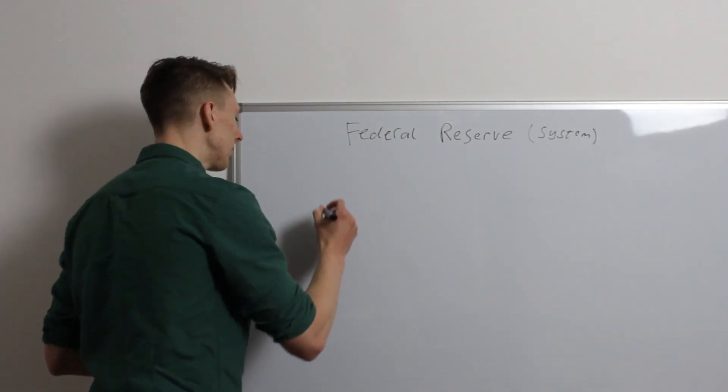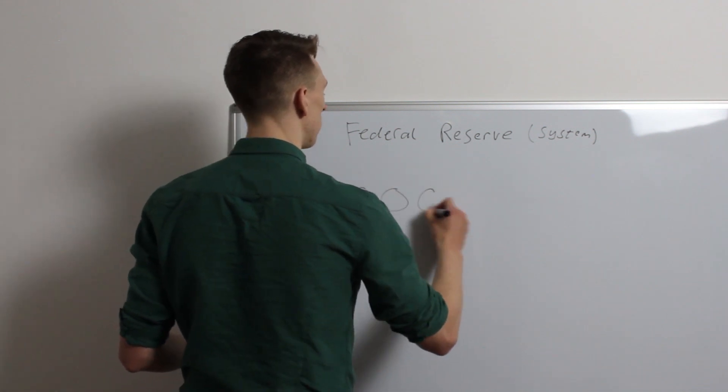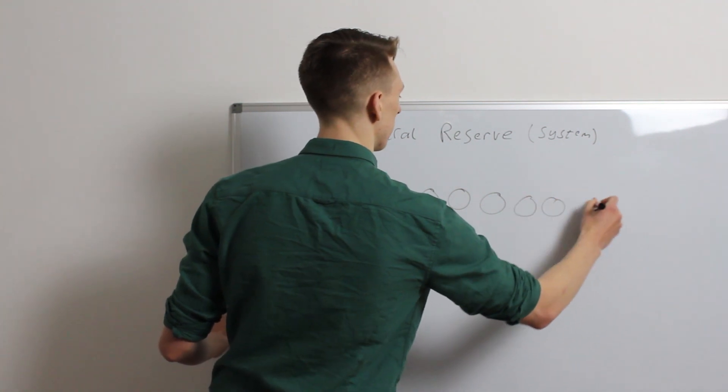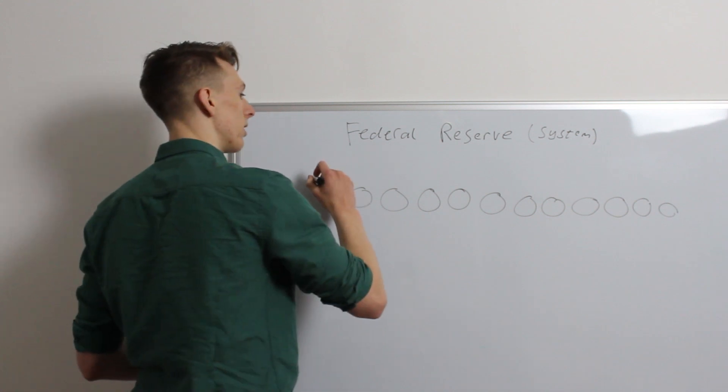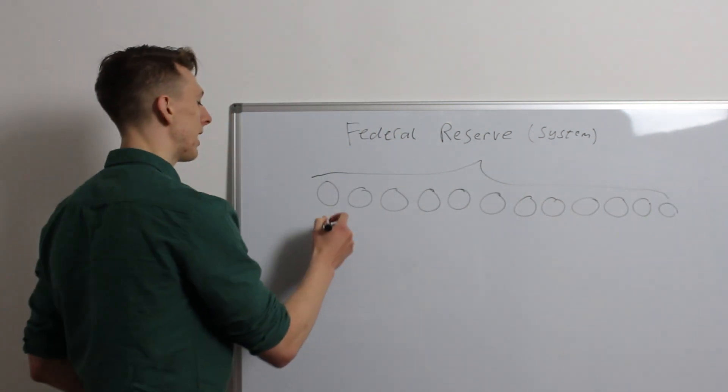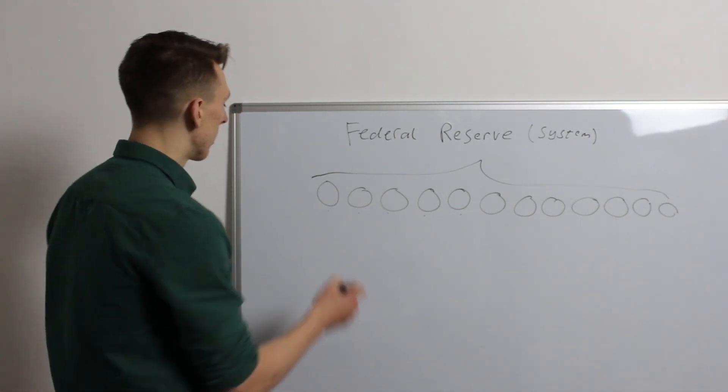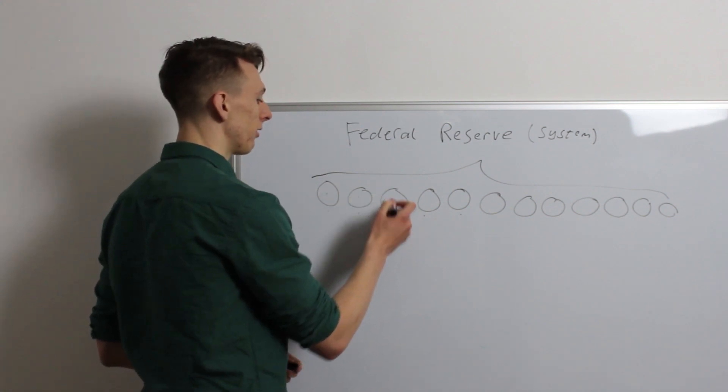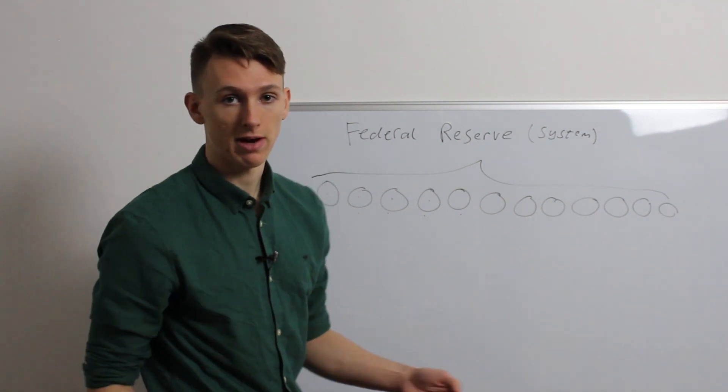Well, there's 12 smaller district banks, each with their own president. There's one in Boston, one in New York, one in Philadelphia, one in St. Louis, and then there's some scattered around the rest of the country.